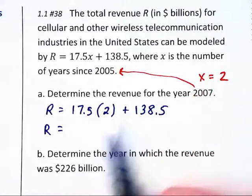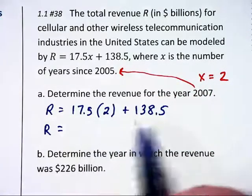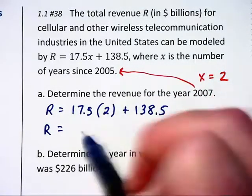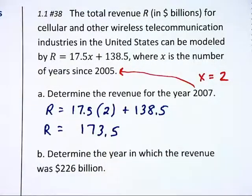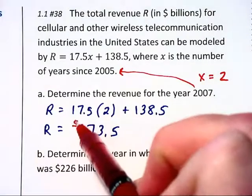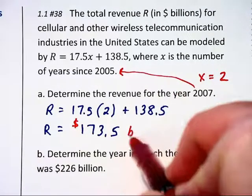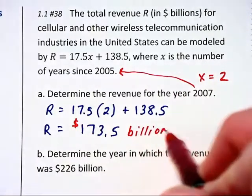R then is equal to 35 plus 138.5, which is 173.5. Since this is a word problem, I should probably put the units of dollar signs and write the word billions afterwards.